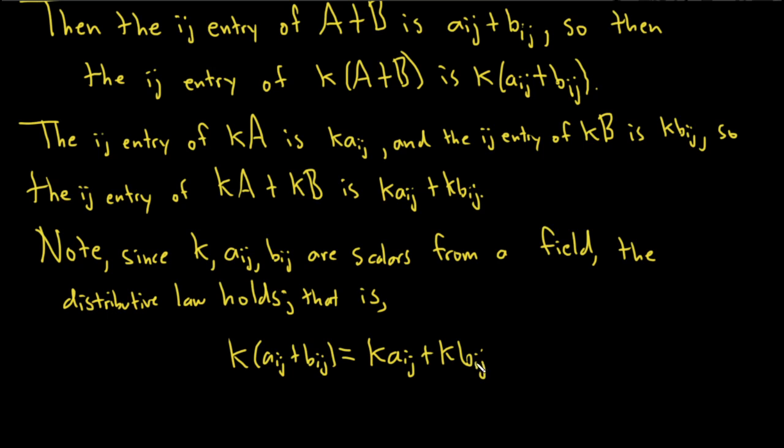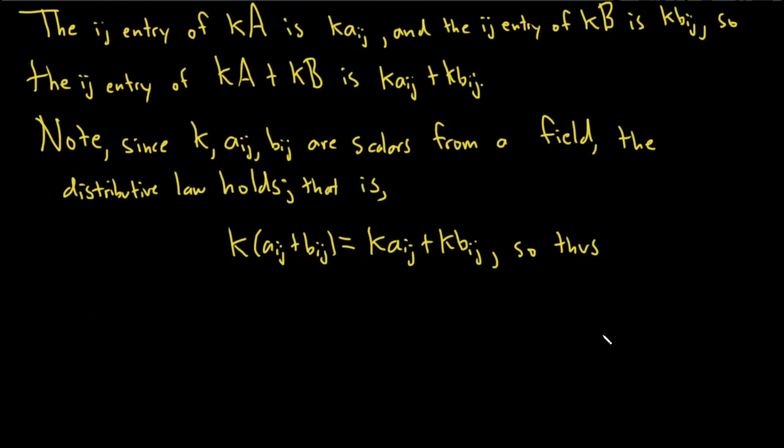So the ij entry, clean this up a little bit. There we go. So the ij entry of k times A plus B is the same as the ij entry of kA plus kB. So this means, so thus, k times A plus B and kA plus kB have identical entries.